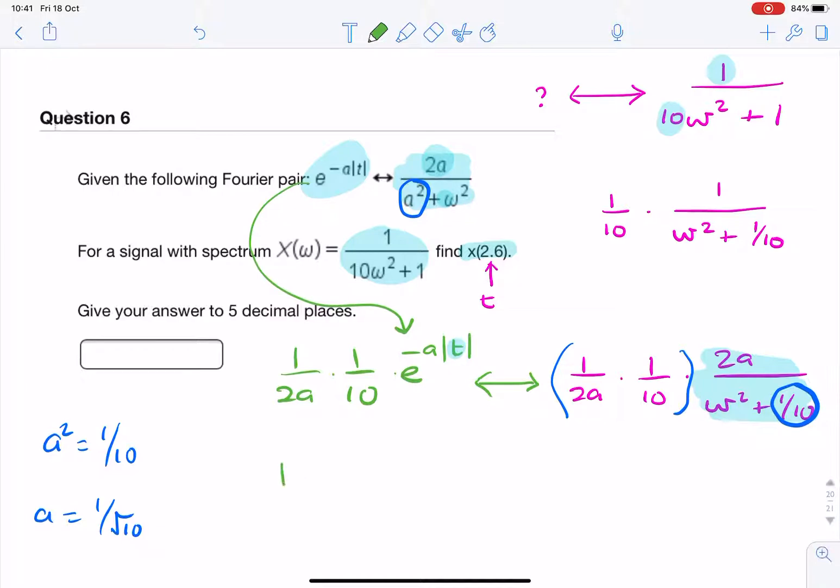So we have 1 over 2 square root of 10 times e to the minus 1 over square root of 10 times t, which in this case is 2.6. That is our x of 2.6.